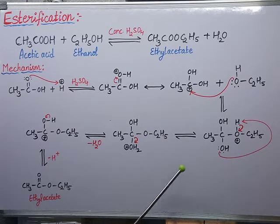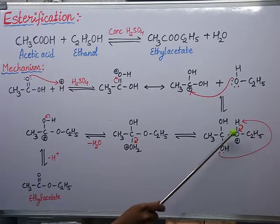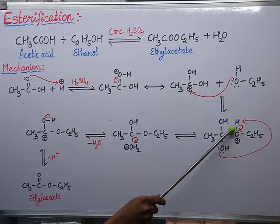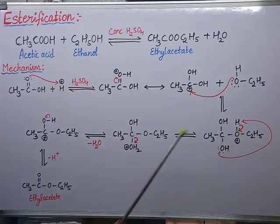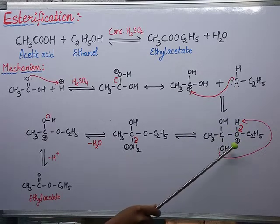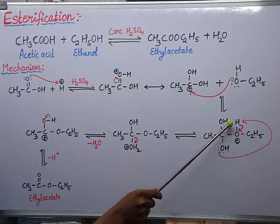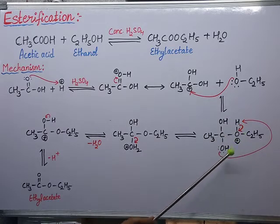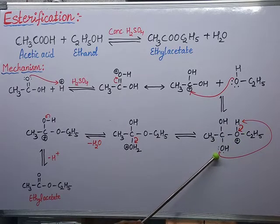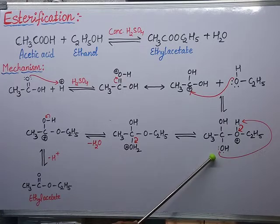Next, in order to nullify this positive charge, I'm shifting the bonded electrons of this oxygen and hydrogen towards oxygen. This positive charge is nullified, and the hydrogen gets a positive charge. This positively charged hydrogen is attracted by the OH group, where oxygen has a lone pair of electrons. So now there is a formation of OH₂.